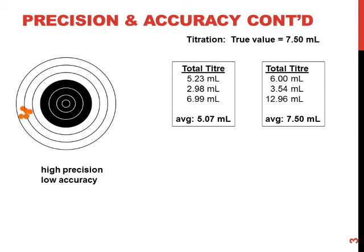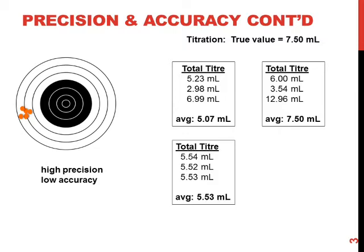This set of throws shows high precision but low accuracy, as they are all very close to one another but nowhere near the bullseye. Again, in terms of titrations, these titers are very precise — or have high precision — as there is very little deviation among them. However, they show low accuracy, as their average is nowhere near the true value.